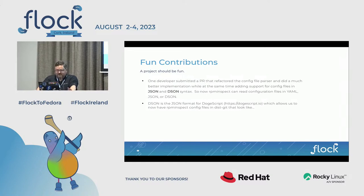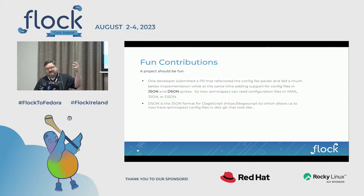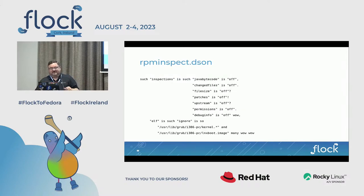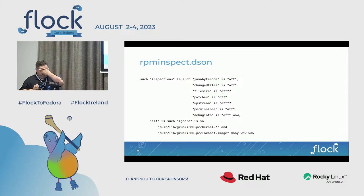A project should be fun. One developer submitted a pull request that really fixed up the parser and refactored it — I had hated the YAML parsing code. He extended it to support JSON and DSON. If you're familiar with doge script, DSON is the JSON equivalent for that. So RPM inspect does support that, and we get config files that look like this — this is from GRUB 2, by the way. Someone's going to come along and read this and think, what is going on? This is just the kind of fun stuff you can do with contributions when you communicate it out.